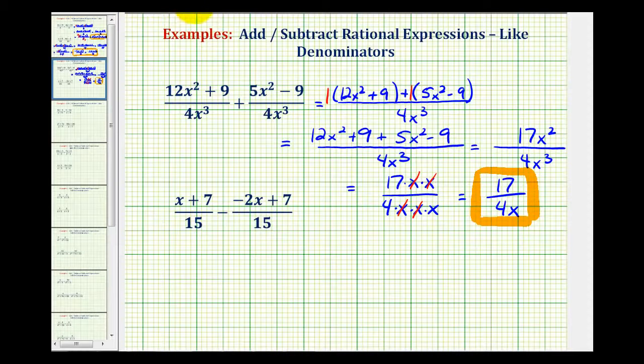Let's take a look at our second example. Again, notice both denominators are 15, so the denominator is going to stay 15. We'd have the quantity x + 7 minus the quantity -2x + 7.